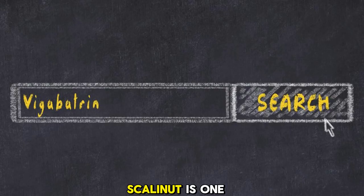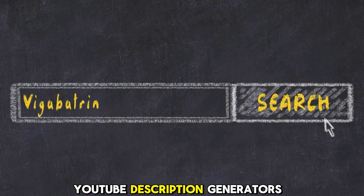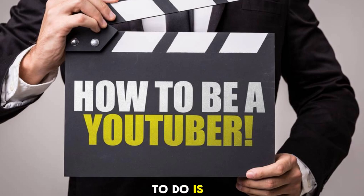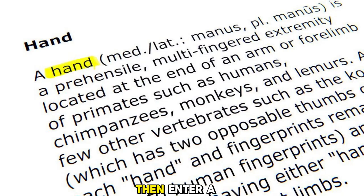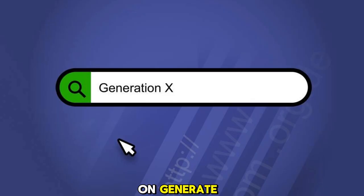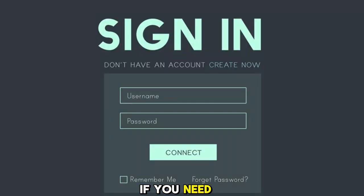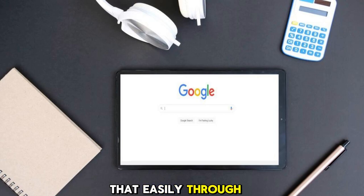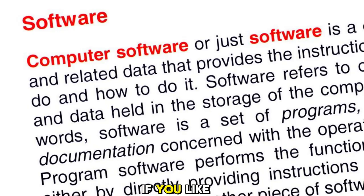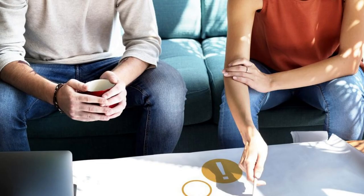Number two: Scalenut. Scalenut is one of the simplest YouTube Description Generators. All you need to do is enter a title for the YouTube video, then enter a few keywords each separated by a comma. When you click on Generate, three descriptions will be generated. These three descriptions have different tones and seem like different writers wrote them. If you need more versions, you will have to sign up for the website, which you can do easily through your Google account. If you need to use it at a professional level, the paid version would be required. You can access the application at scalenut.com.